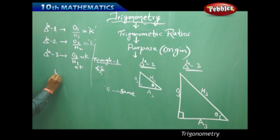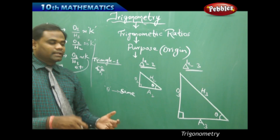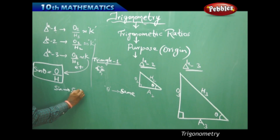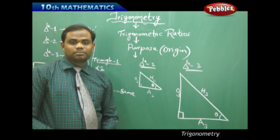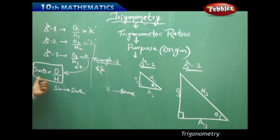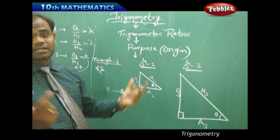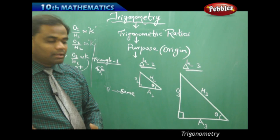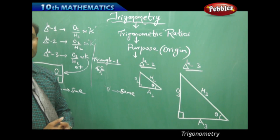Mathematicians started calling this ratio — opposite divided by hypotenuse — as sine theta. The value K obtained by dividing the opposite side by the hypotenuse is now called sine theta. So sine theta equals opposite by hypotenuse. This holds for any triangle with angle theta: take a triangle as large as the sky with the same angle theta, and opposite by hypotenuse of that triangle will equal opposite by hypotenuse of any smaller triangle.